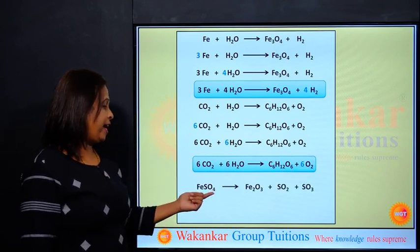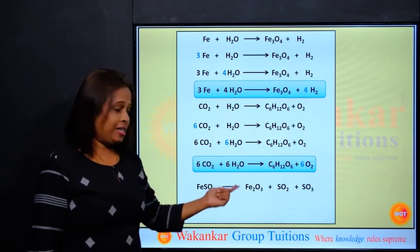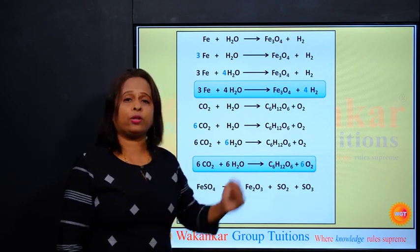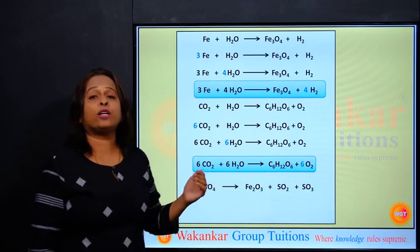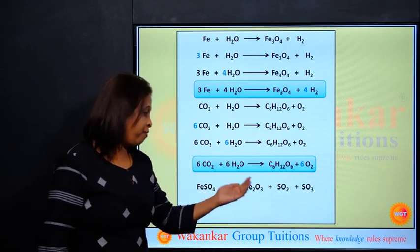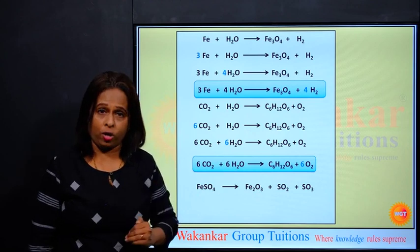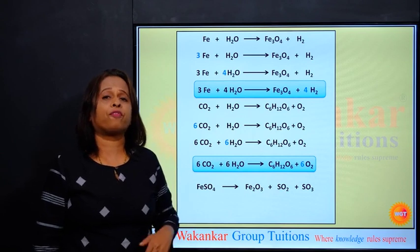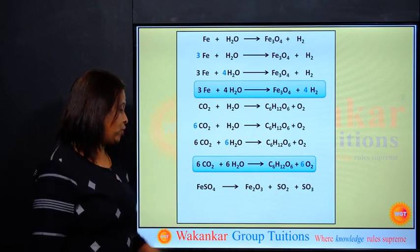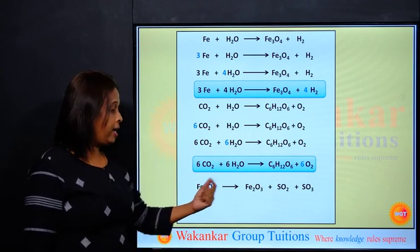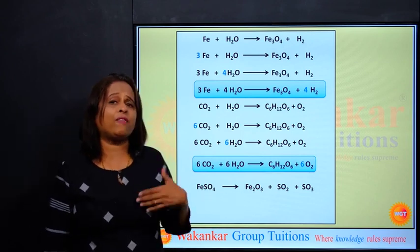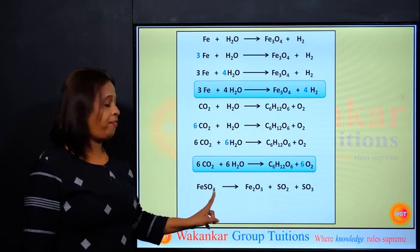Let us go ahead. FeSO4 gives Fe2O3 + SO2 + SO3. FeSO4 is your ferrous sulfate, Fe2O3 is ferric oxide, SO2 sulfur dioxide, SO3 sulfur trioxide. Let us check here. 1 Fe and 2 Fe. Metal is iron, so obviously I will go for 2 FeSO4.